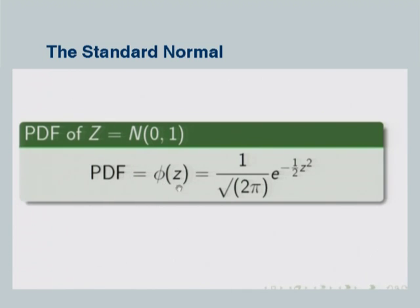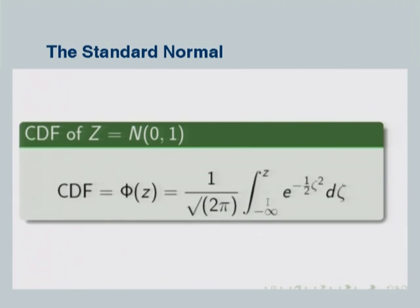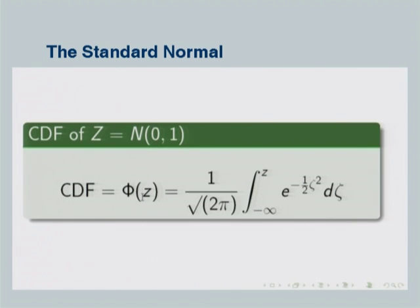Phi evaluated at z is just like the normal random variable PDF except we put sigma equal to 1 and mu equal to 0. Similarly, we can find the CDF of the standard normal, for which we use the capital letter capital phi. Instead of f we use Greek phi, and instead of x we denote it with z — obtained by integrating the PDF from minus infinity to z.